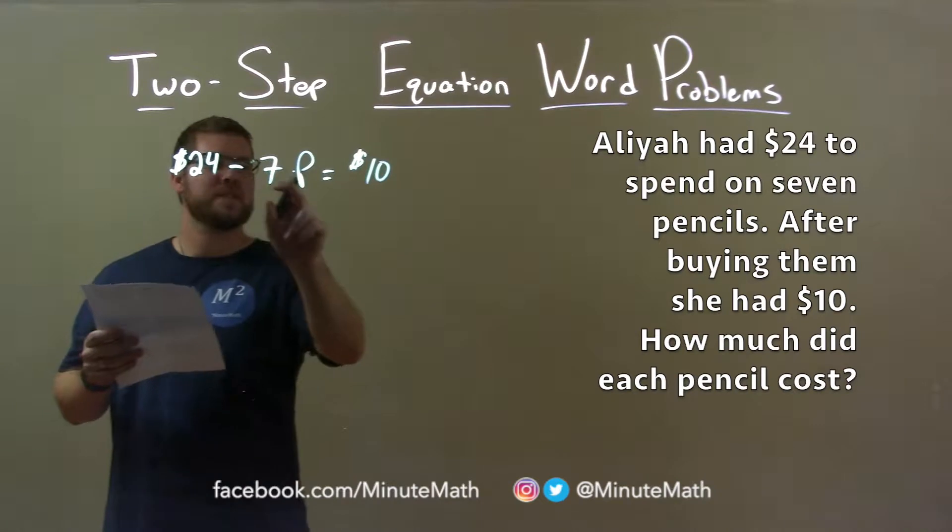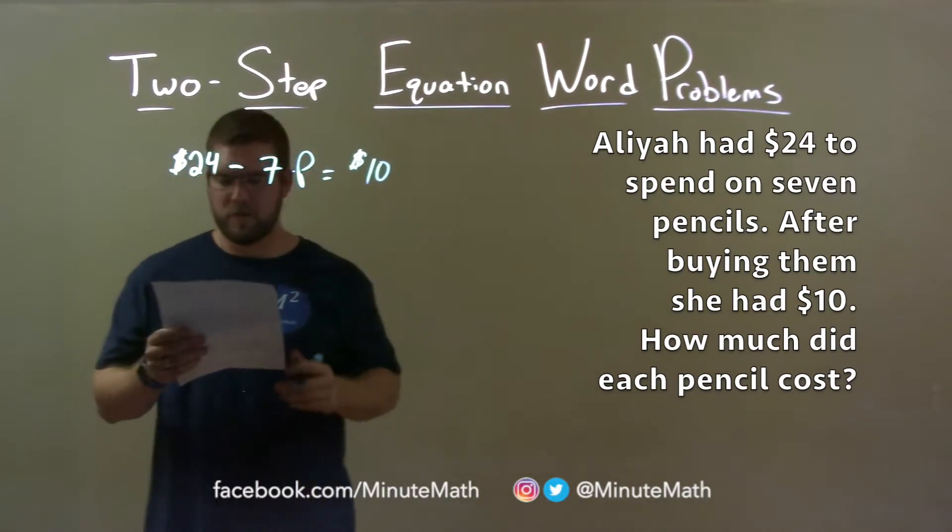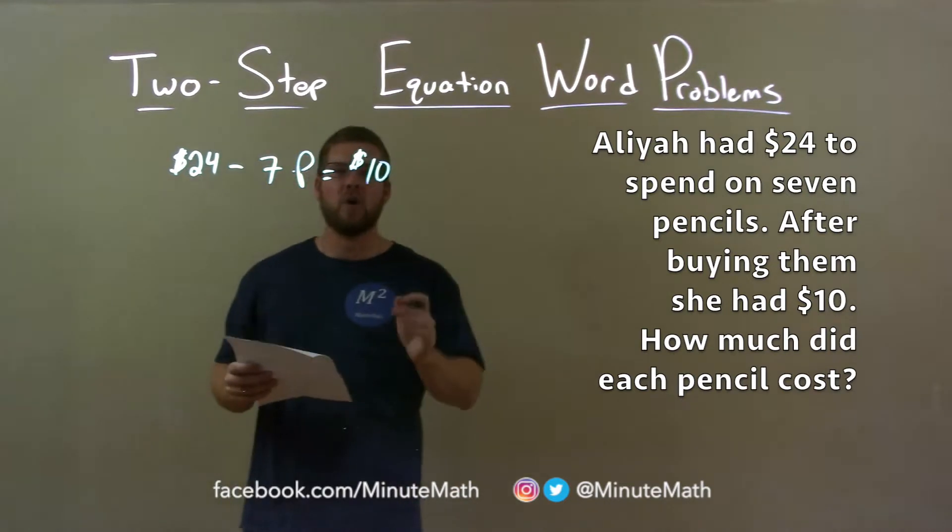So, she started with $24, she bought 7 pencils, so 7 times the price of each pencil, subtracted that, $10 left over. And so, now we have to solve for P.